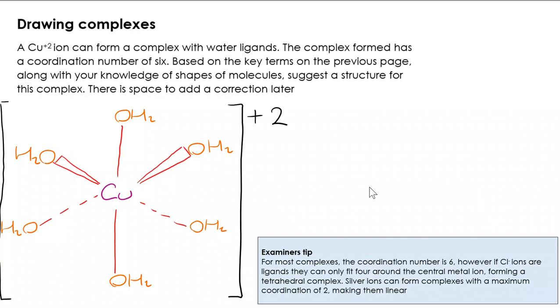There's a very important note just down here. Chloro ligands, Cl minus ions forming dative covalent bonds, because the chloride ions are bigger, you can't fit six around them. So any complex that has chlorine or chloro ligands will have a coordination number of four, making it tetrahedral. The other exception to the rule is silver. Silver can only form complexes with two ligands, making them linear with a bond angle of 180.